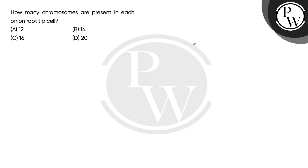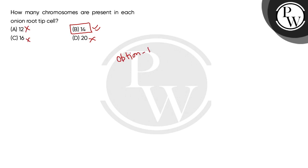This is an NCERT-based question, no explanation required. The fact is that onion root cells have 16 chromosomes present in each cell. The options are 20, 16, and 12. The correct answer is option number B.